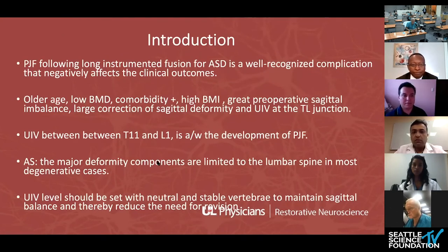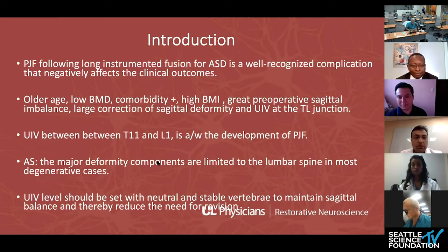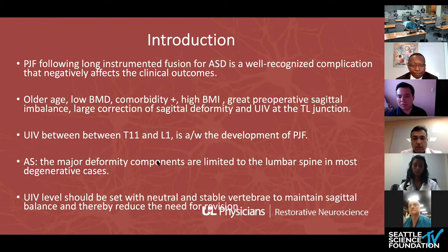Proximal junction failure following long instrumented fusion for ASD is a well-recognized complication with negative impact on outcomes. Known risk factors include older age, osteoporosis, comorbidities, higher BMI, greater preoperative sagittal imbalance, larger correction of deformity, and UIV at the thoracolumbar junction. Upper instrumented vertebra between T11 to L1 is associated with development of PJK and PJF as mentioned in multiple studies. Since the majority of deformity happens at the lumbar spine, the thoracolumbar junction is involved in many operative cases. UIV level should be set at a neutral and stable vertebra to maintain sagittal balance and reduce the need for revision.